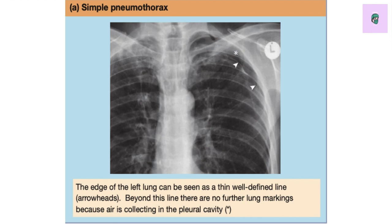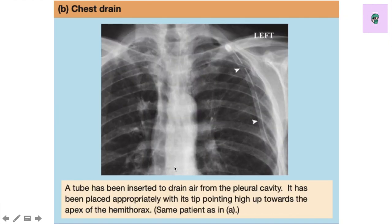First: simple pneumothorax. You can see the wedge at the edge of the left lung. Look at the arrowhead and the asterisk — the asterisk area shows no lung markings, which indicates pneumothorax. However, there is no mediastinal shift, and there would be no hemodynamically unstable patient history, so this is a simple pneumothorax.